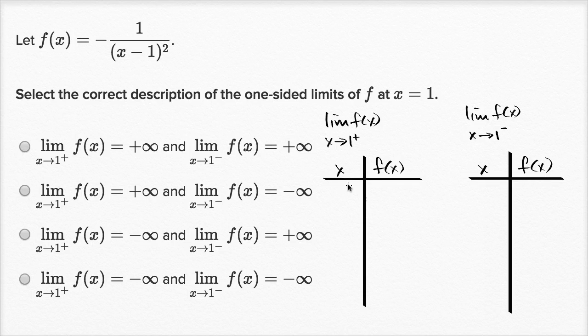If we approach one from the right-hand side here, that would be approaching one from above. So we could try 1.1, we could try 1.01. Now f of 1.1 is negative one over 1.1 minus one squared. This denominator here is going to be 0.1 squared, which is 0.01. And so this is going to be negative 100.